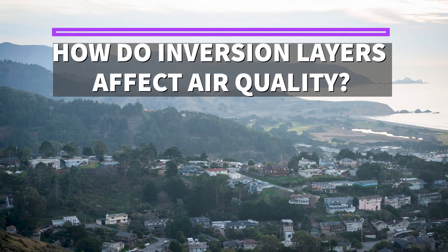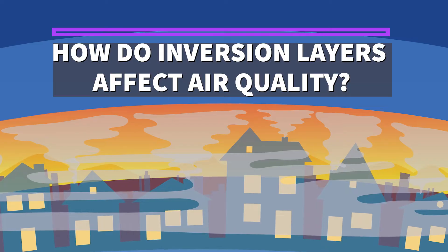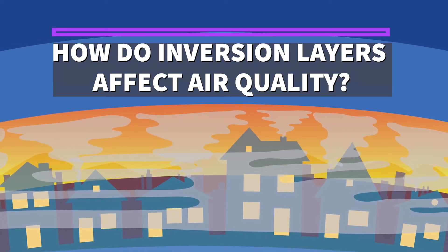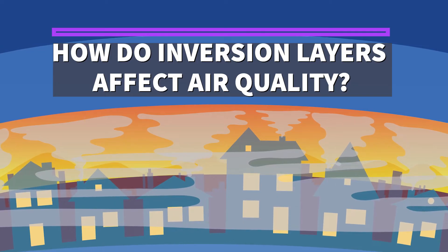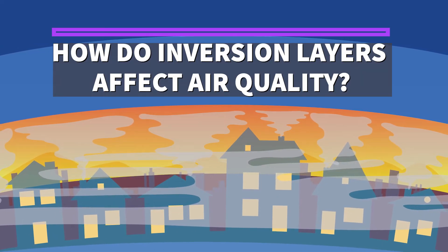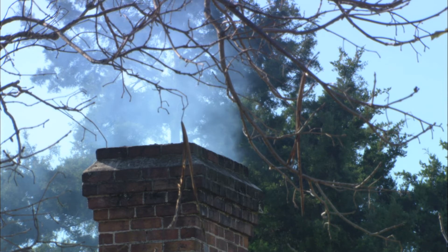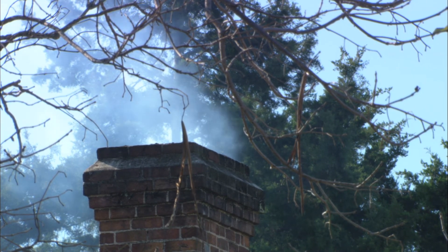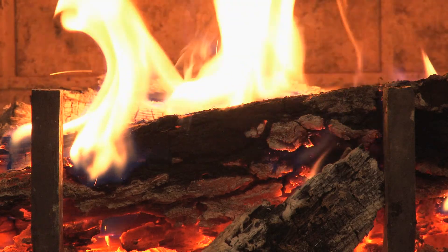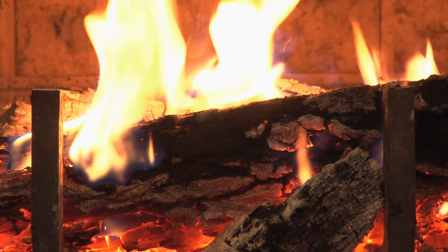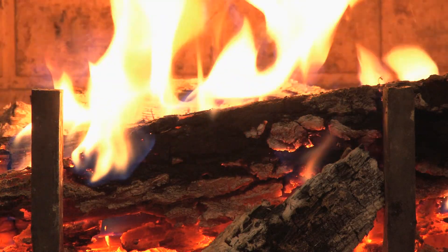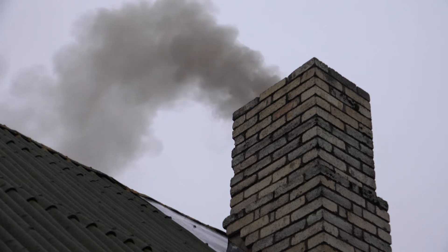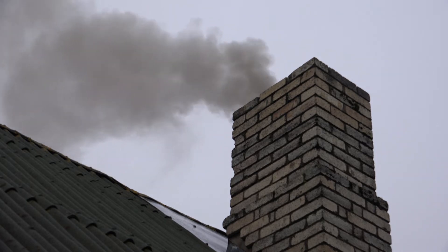How do inversion layers affect air quality? Inversion layers act as a nearly impenetrable lid, preventing pollutants from dispersing and causing pollution to build up over time. About one-third of wintertime air pollution in the Bay Area comes from wood burning. During colder months when residents tend to burn wood, smoke pollution can degrade air quality. When there is a temperature inversion, this smoke can become a serious public health issue.